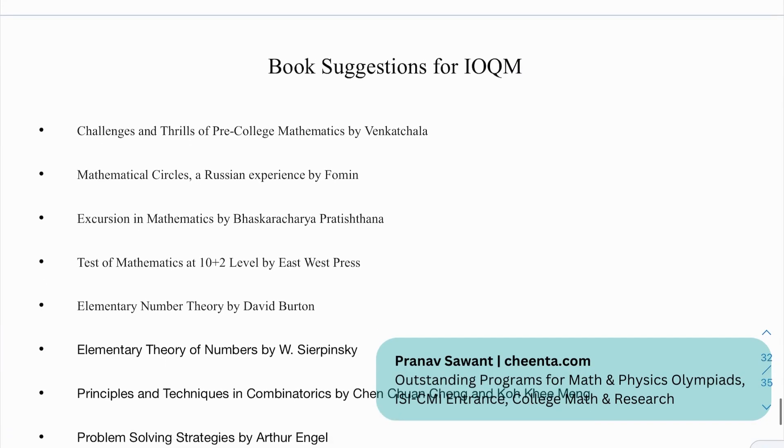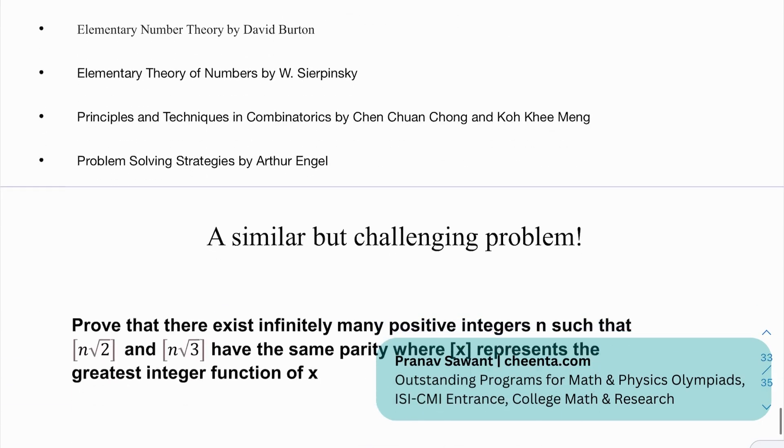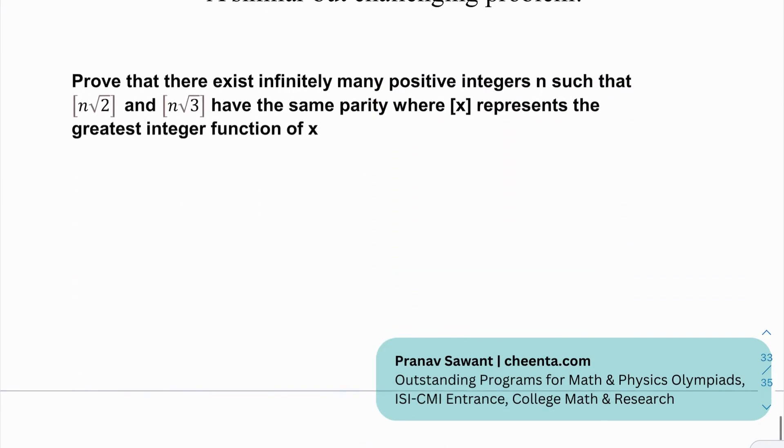Okay. So after that, we have certain book sessions for the IOQM. Challenges and Thrills of Pre-College Mathematics, Mathematical Circles, and Excursion in Mathematics, A Test of Mathematics at 10 plus 2 Level, Elementary Number Theory by David Burton, Elementary Theory of Numbers by Sierpinski, Principles and Techniques in Combinatorics, and obviously Problems on Techniques by Arthur and Engel. Great.